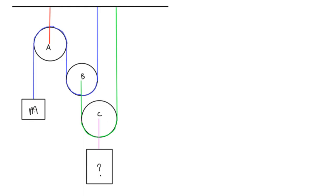If we know that this is a mass m, we'll do this problem symbolically. We want to find out how much this mass would need to be for this system to be in static equilibrium. The way we do this is we want to break down into different free body diagrams.